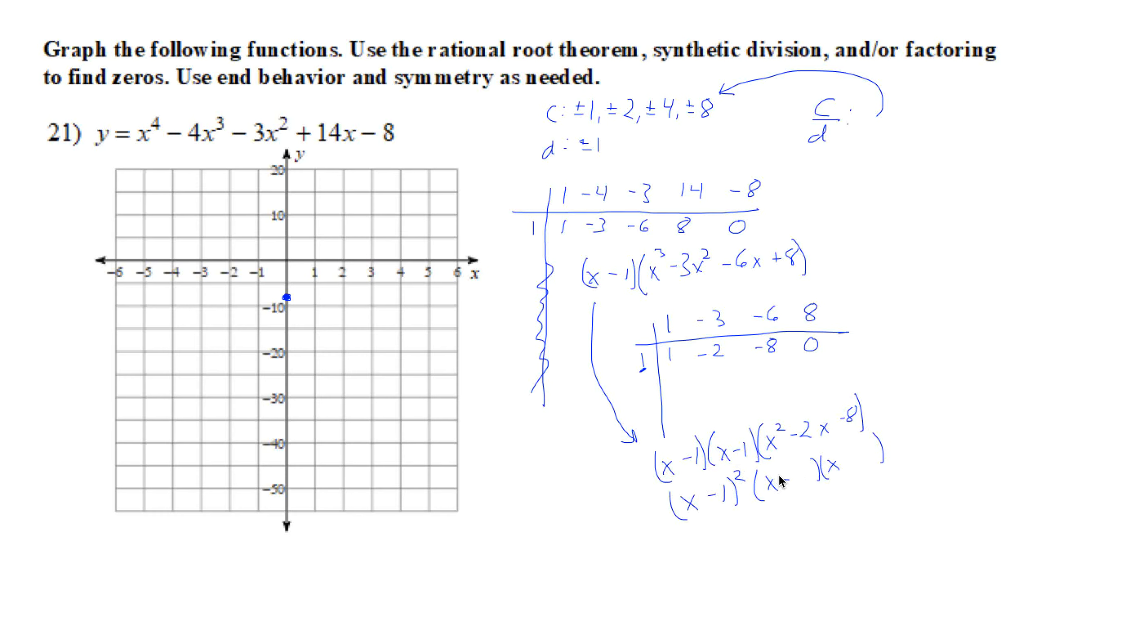We will continue factoring this one. We have an x and an x, we have negative 8, which looks like we want to do negative 4 and positive 2. So our x-intercepts, or our zeros, are going to be at 1, that's going to be multiplicity 2, so that's important, 4, and negative 2. So let's go ahead and graph those points. We have 1, 4, and negative 2.